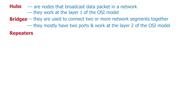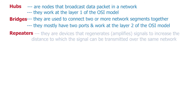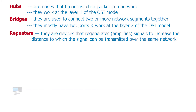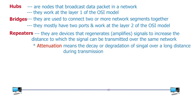Talking about repeaters: repeaters are devices that regenerate data signals in order to extend the length to which the signal can be transmitted over the same network. As data signals travel over a long distance, depending on the medium — whether a cable or wireless — attenuation occurs, meaning the signal decays. When this happens, we can place a repeater in the middle to regenerate and amplify the weak signal from one side to the other side of the network.